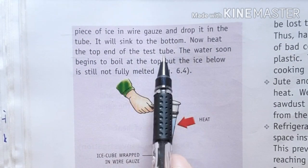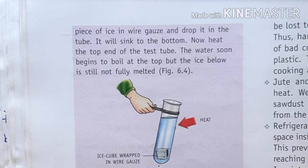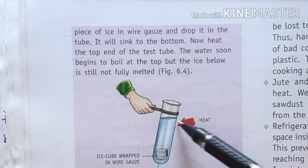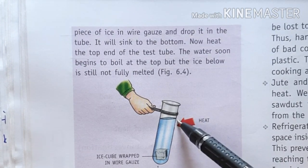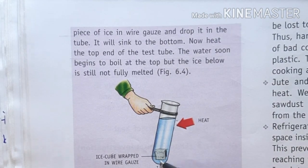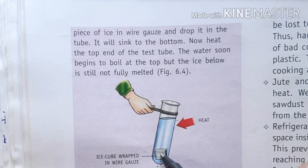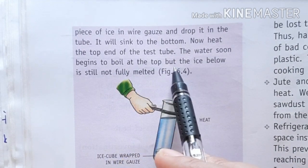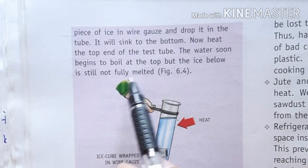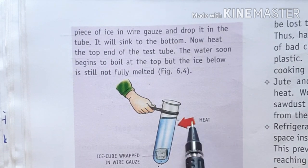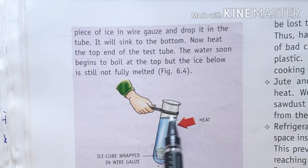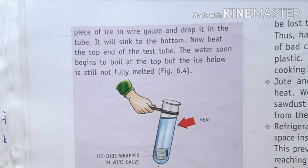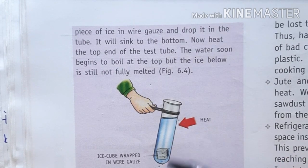Now heat the top end of the test tube. The water at the top soon begins to boil, but the ice at the bottom is still not fully melted. You will see that while the water boils at the top, the ice does not melt — how is this possible?